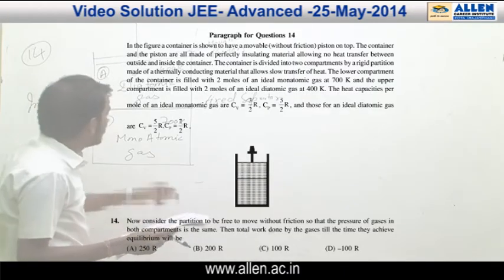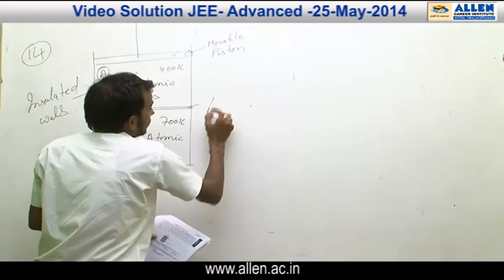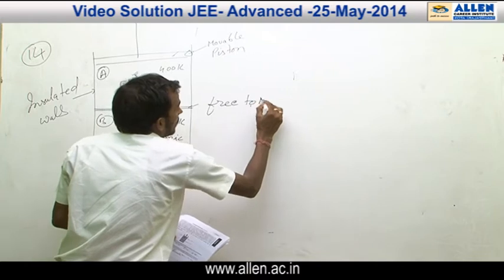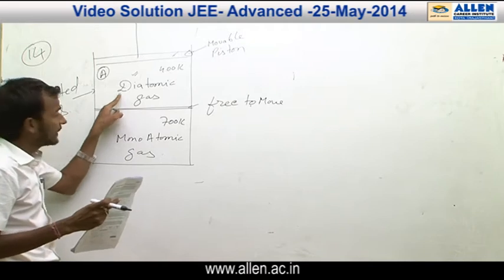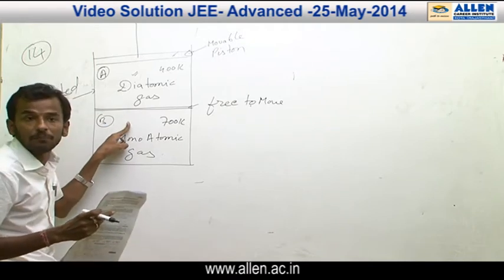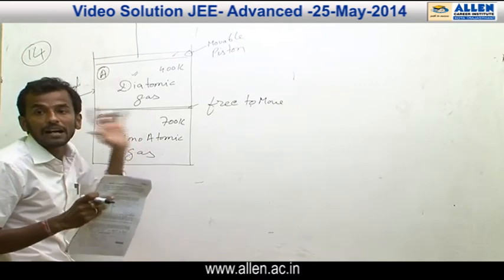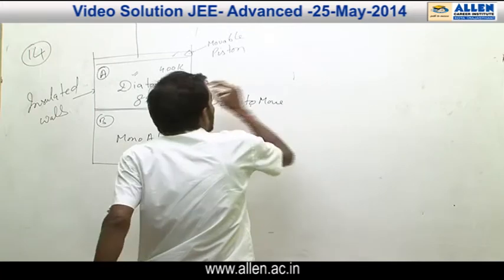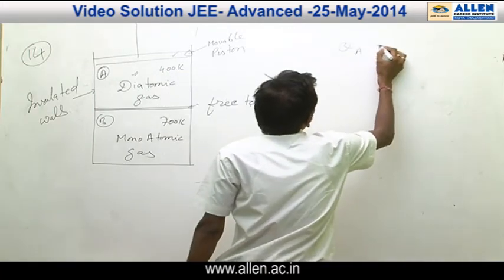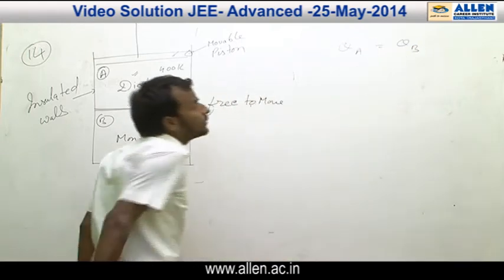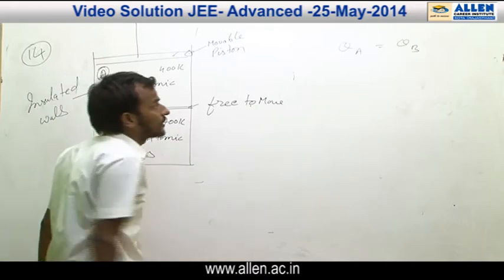In question number 14, the separator is free to move. The pressure in chamber A equals the pressure in chamber B. This means both gases will follow the isobaric process, and heat gained by chamber A equals heat lost by chamber B. So Q_A = Q_B.